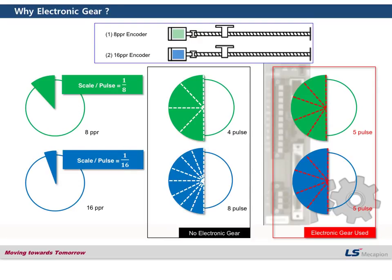This is why electronic gear is very useful. With no electronic gear, different axes need different command inputs. But if you set the correct electronic gear ratio, they will need the same command input, making it much more convenient to control diverse axes with very different resolutions.